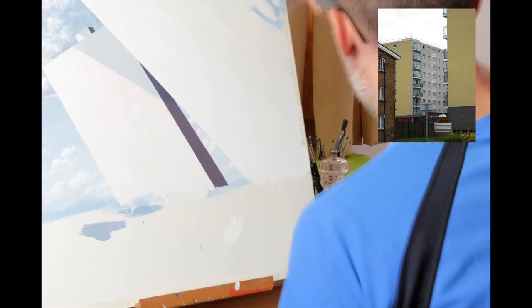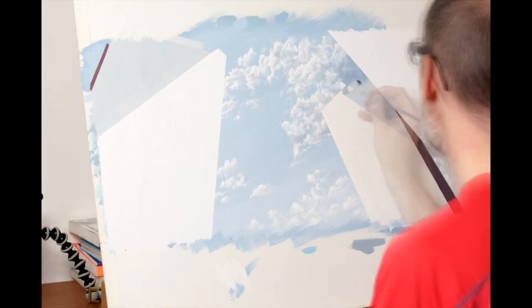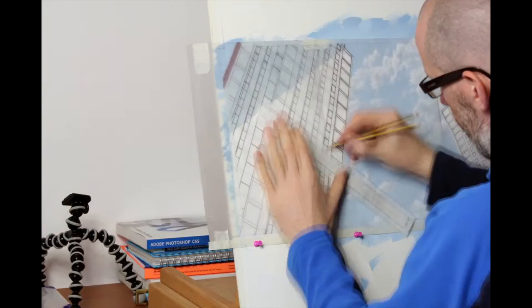The next step was to block in the buildings and all the main colors on those. Now for my reference photos there wasn't actually a lot of difference in tone on the actual buildings, so that was a really quick job to do that. The buildings were all very stark white, so I've stuck with that look.